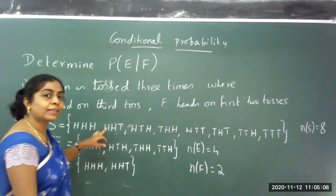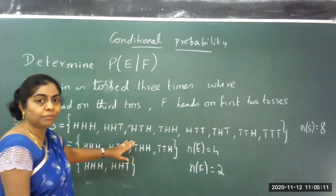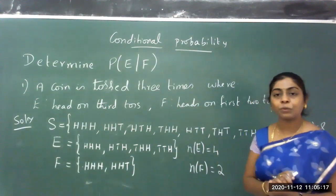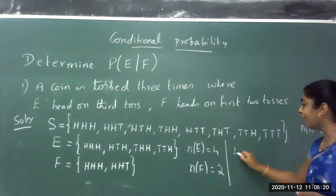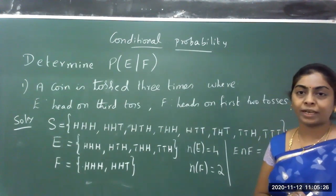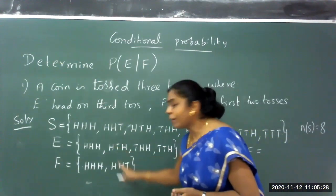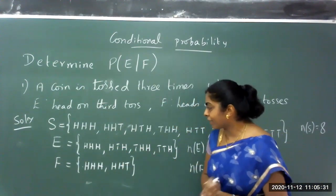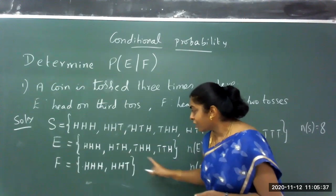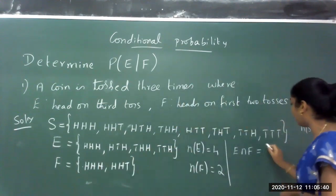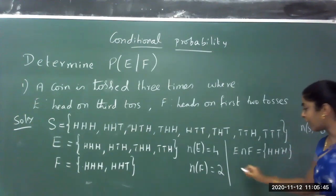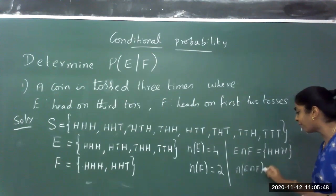So I have the sample space with the coin tossed three times, and I have defined the two events. Next, to find the conditional probability, we require E intersection F — the common elements. The common elements between E and F: HHH is possible in both. HHT is in F but the third element is tail, not in E. So the only common element is HHH. The number of elements in E intersection F is 1.